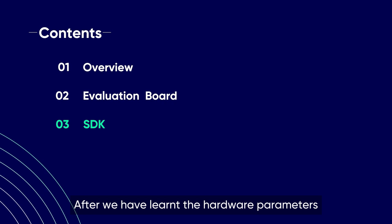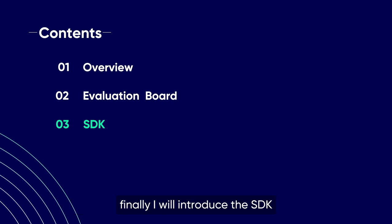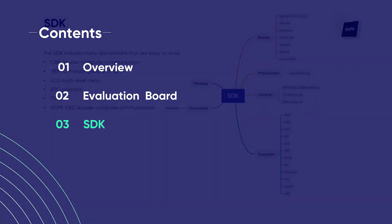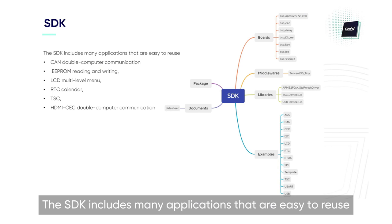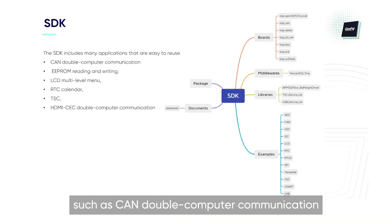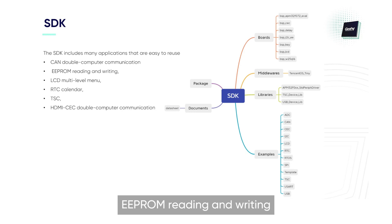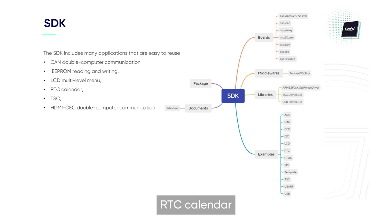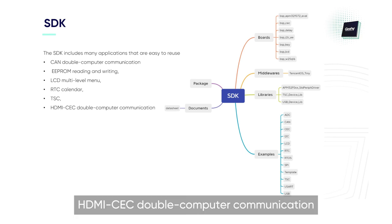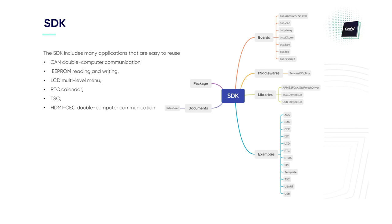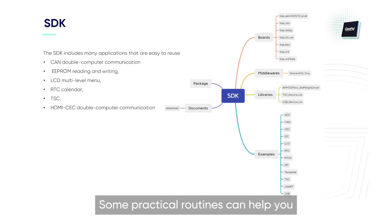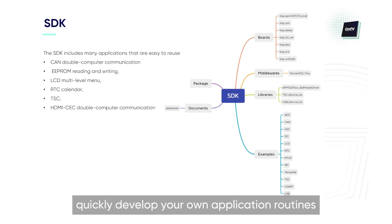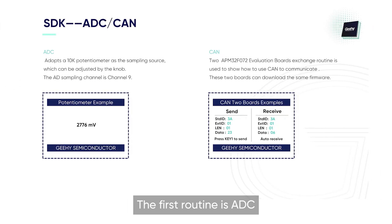After we have learned the hardware parameters, I will introduce the SDK. The SDK includes many applications that are easy to reuse, such as CAN dual-computer communication, EEPROM reading and writing, LCD multilevel menu, RTC calendar, TSC, HDMI CEC dual-computer communication, and more. Some practical routines can help you quickly develop your own application routines.